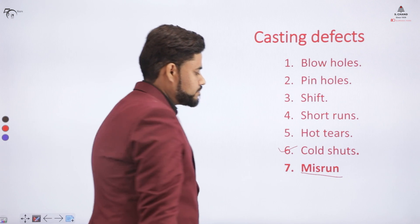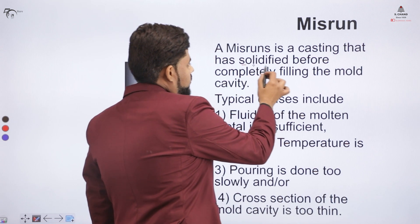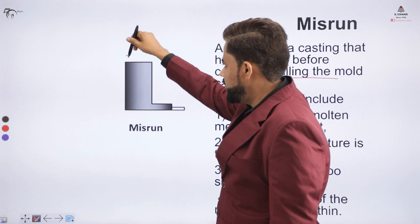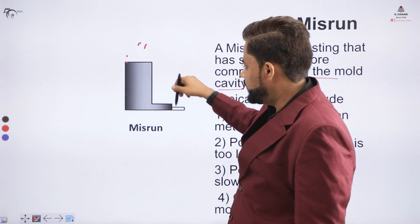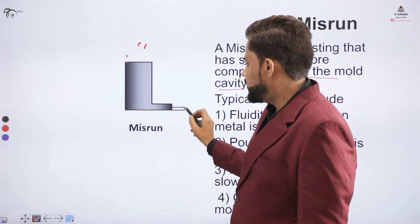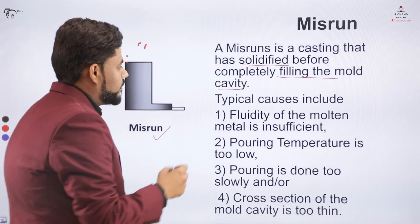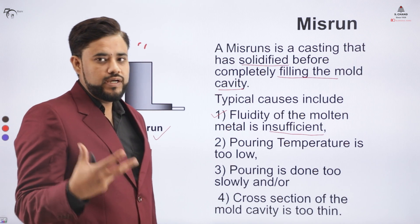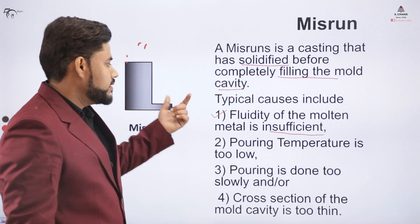Now we cover misrun — a casting defect in which solidification takes place before the entire mold cavity is filled. For example, while pouring the material, the metal solidifies before reaching all parts of the cavity, so that unfilled area is the misrun defect. Typical causes include insufficient fluidity of the metal — the metal must be heated to a liquid fluid state to fill the entire cavity.